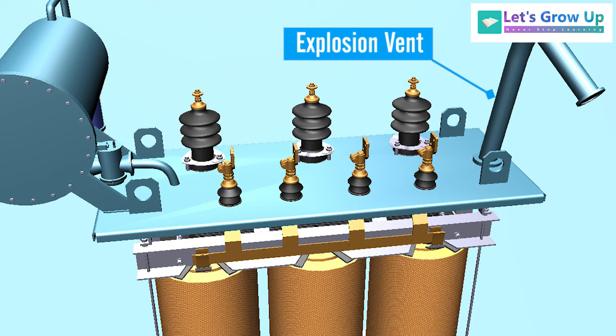Explosion vent: It is used to expel boiling oil in the transformer during heavy internal faults in order to avoid the explosion of the transformer. The oil rushes out of the vent.